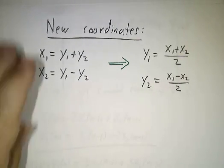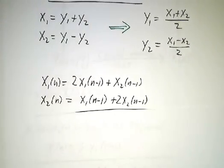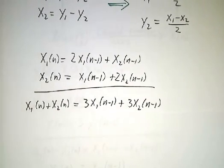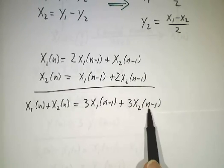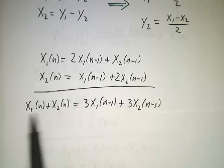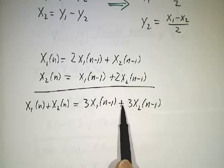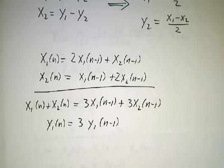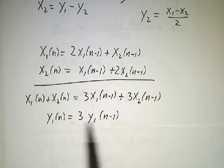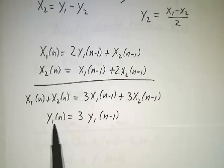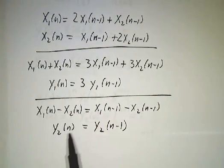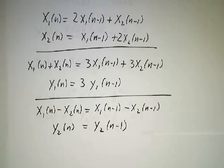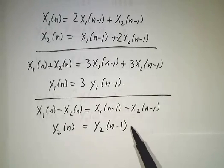We're going to rewrite our equations in terms of the y's. So here are our equations. If we take the sum of those two equations, we get that x1 plus x2 at time n is 3x1 plus 3x2 at time n minus 1. And if you divide by 2, this becomes y1 at time n. This becomes 3y1 at time n minus 1. So lo and behold, y satisfies a decoupled equation. You don't have to know anything about y2 to solve for y1. Likewise, if you take the difference of the equations and divide by 2, you get that y2 at time n is y2 at time n minus 1. So the evolution of y1 is easy, the evolution of y2 is easy.